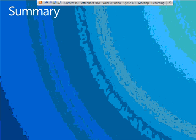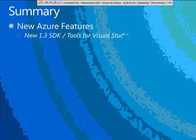Today we did a level set on the platform, took a look at the cache service and the Windows Azure Connect service, and demoed Connect. In the third part of our series, which is next week, we're going to look at the VM role feature in Windows Azure Compute as well as the new SQL Azure Reporting Services feature. That will wrap up our three-part series on what's new in Windows Azure. At this point, we're open for questions.